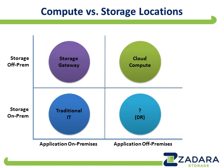Going diagonally to the top right — everything is off-premises. My storage is off-premises and my application or servers are off-premises. That's cloud computing: the Amazon Web Services model, Microsoft Azure model, any cloud provider you can name. Everything is still co-located with each other, but provided as a service, giving the advantage of elasticity — one can very easily add or subtract capacity, both for compute and storage, as needed to meet shifting needs.